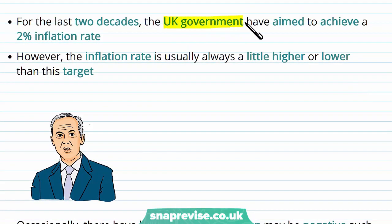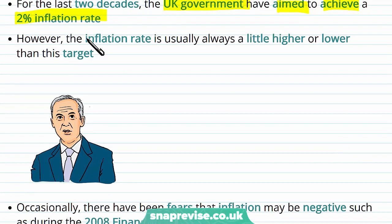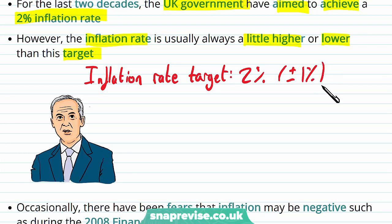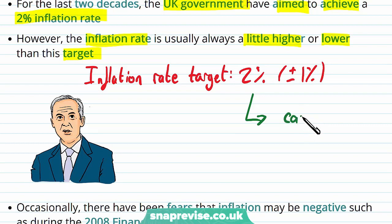For the last two decades, the UK government has aimed to achieve a two percent inflation rate — that is what low inflation means. However, the inflation rate is usually a little higher or lower than this target. The government and the Bank of England are comfortable with an inflation rate of plus or minus one percent around the target, so the rate can be anywhere from one percent to three percent.